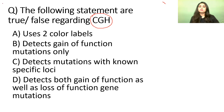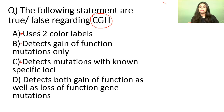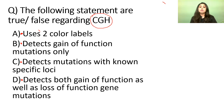The first option says it uses two colour labels. The second says it detects gain of function mutation only. The third says it detects mutations only with a known specific locus. And the fourth says it detects both gain of function as well as loss of function gene mutations. These are the four statements you have to label as true and false.